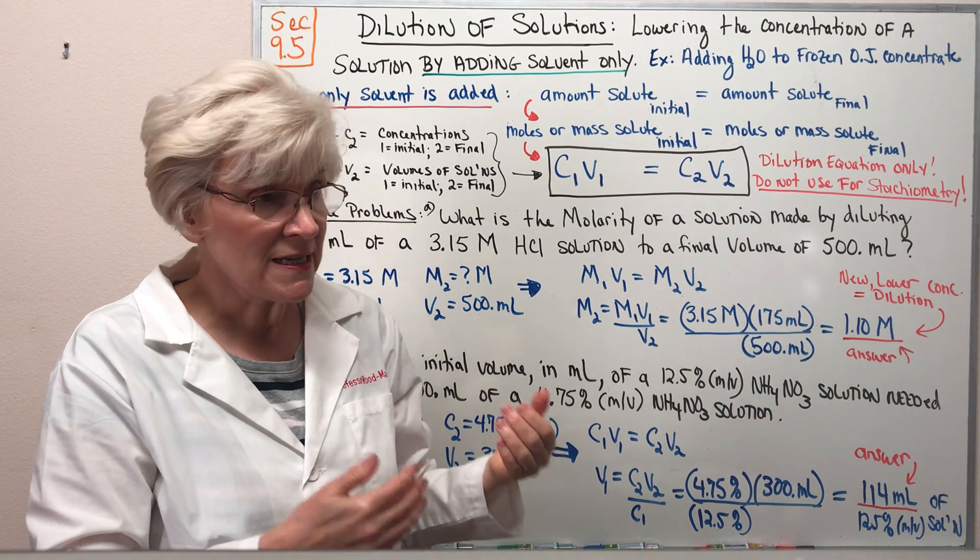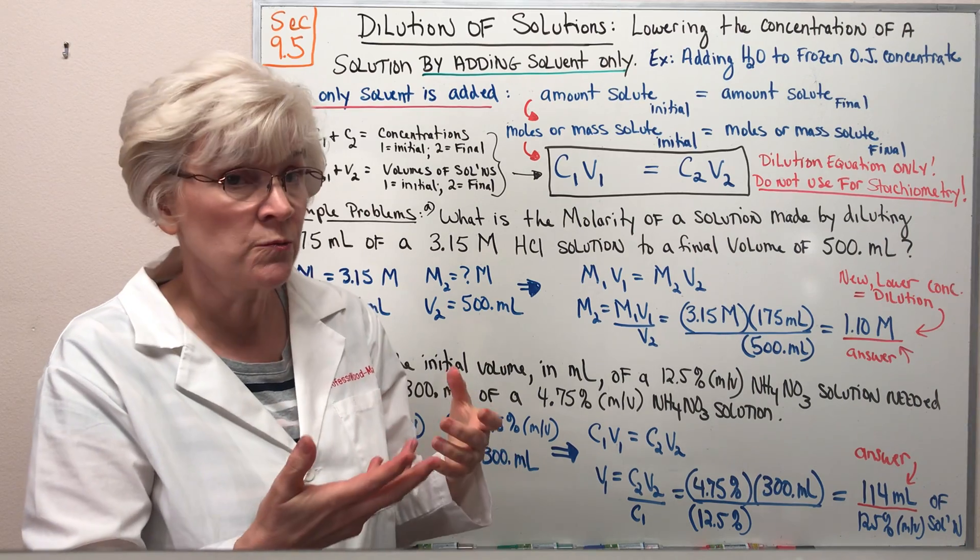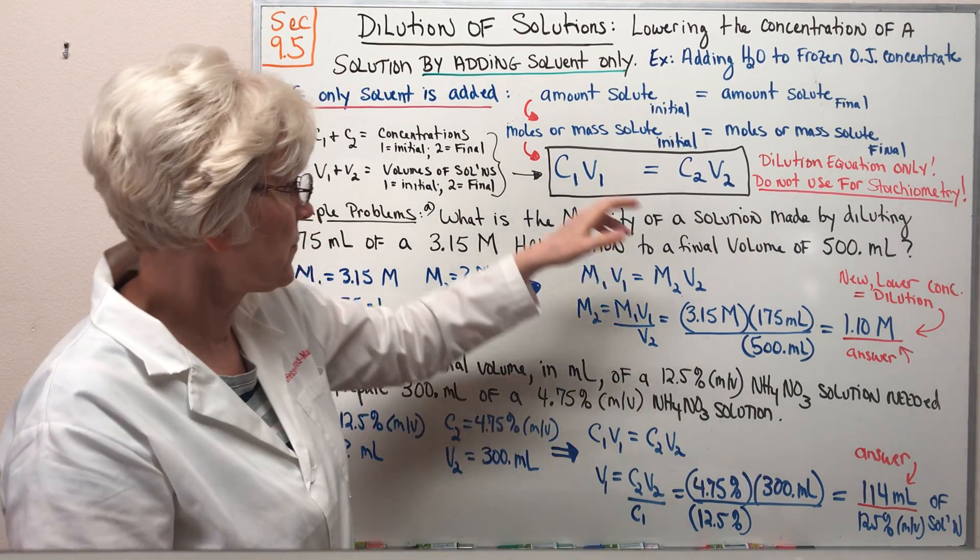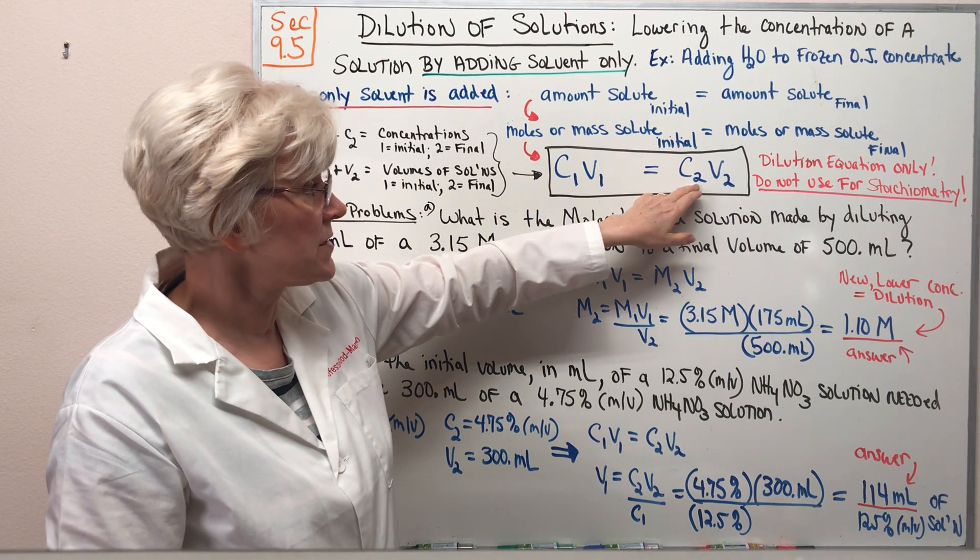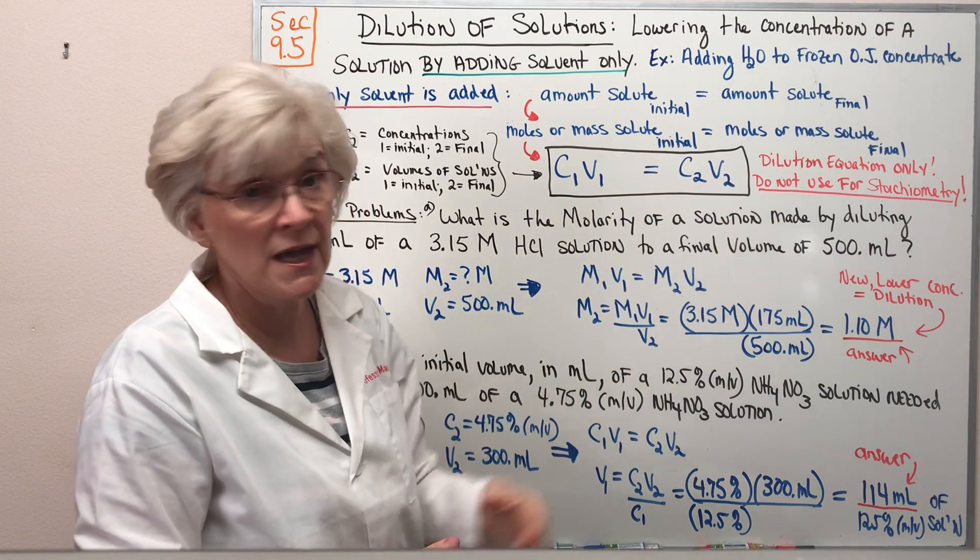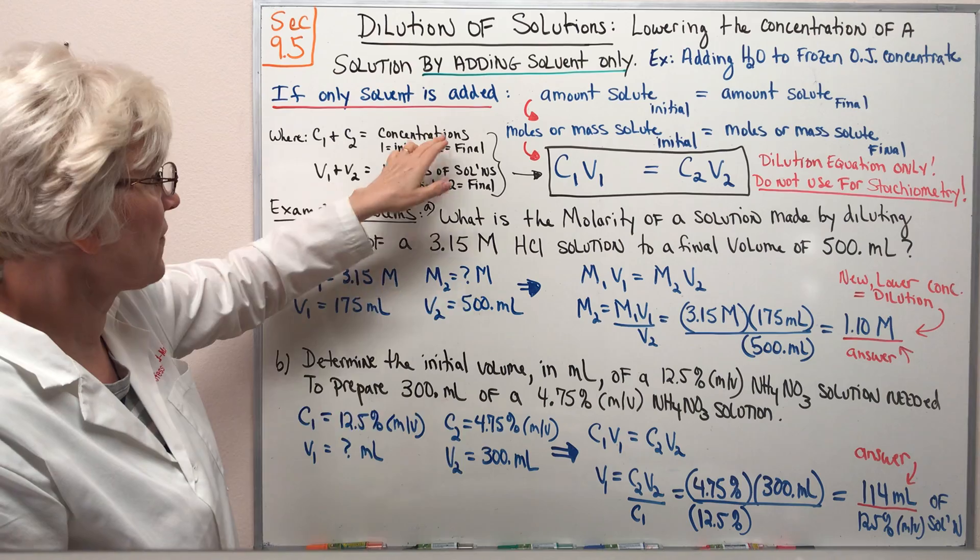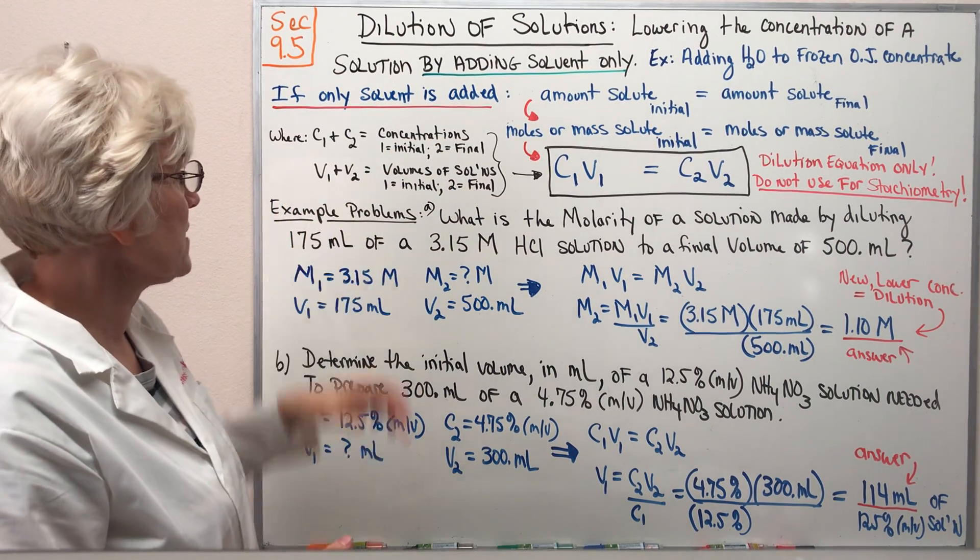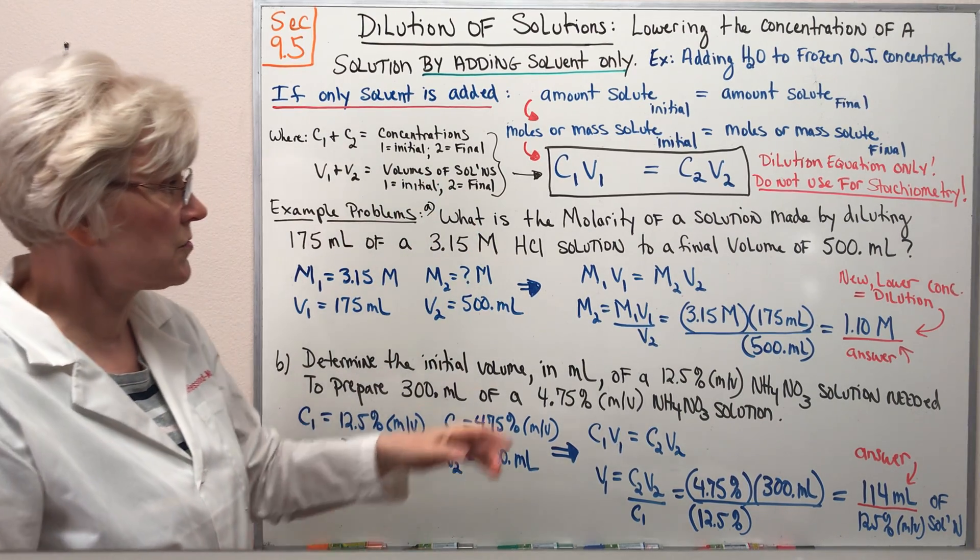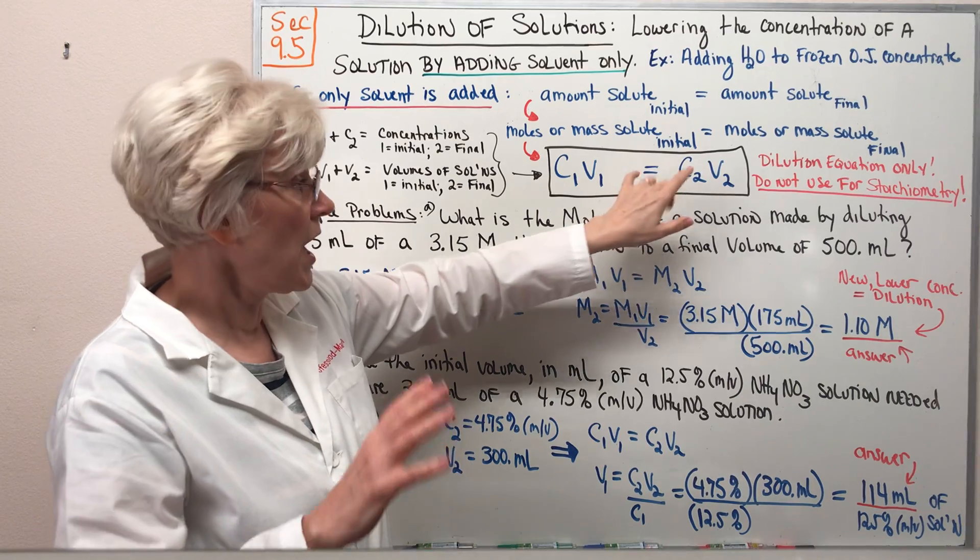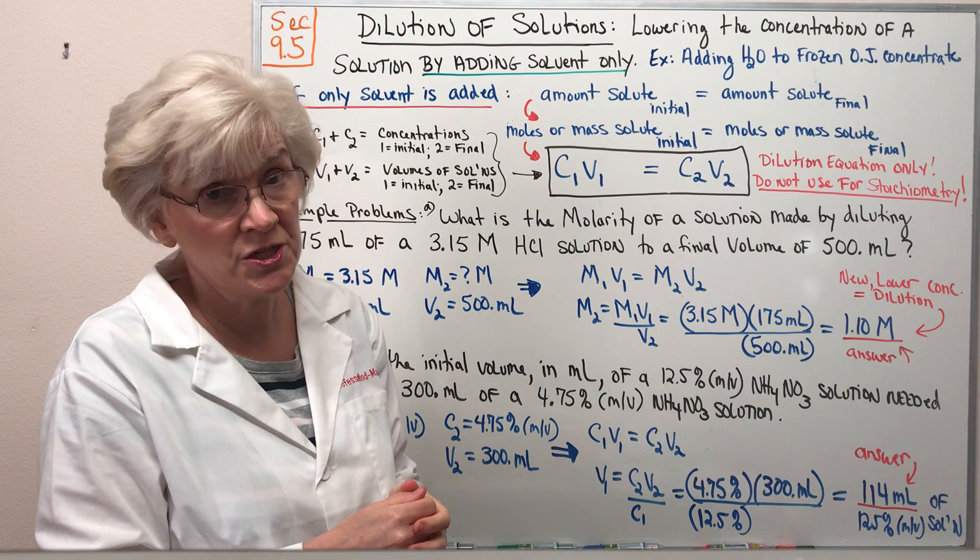We looked in our previous example on molarity that molarity times volume equals moles. Or in other words, concentration initial times volume initial equals concentration final times volume final. So C1V1 refer to initial and final concentrations, V1V2 refer to initial and final volumes of solution. This is the dilution equation that applies to all different types of concentration expressions.